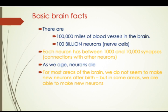Each neuron basically has about one thousand to ten thousand synapses — synapses being connections with other neurons. So you have about a hundred billion neurons in total. As we age, neurons will die, and for most areas of the brain we do not seem to make new neurons after birth, though in some cases new neurons may be generated.